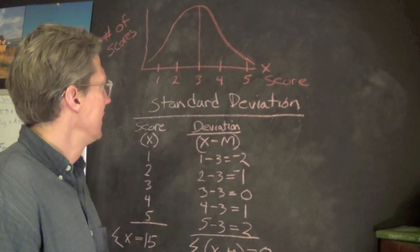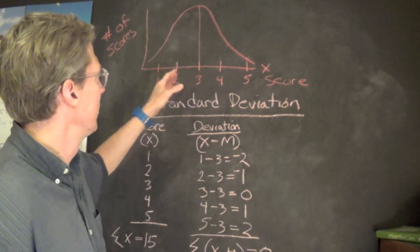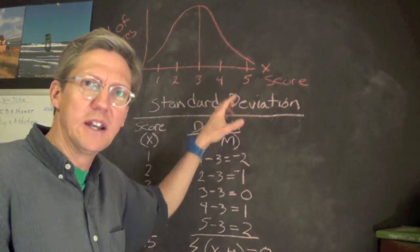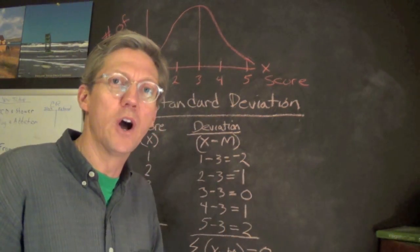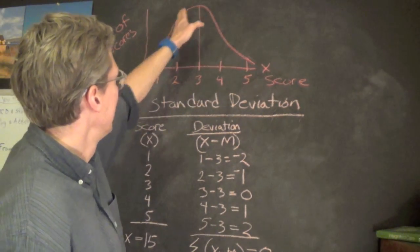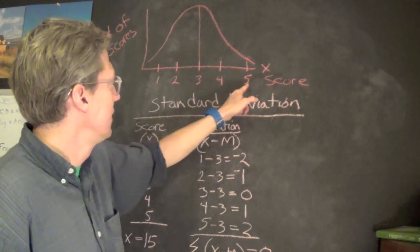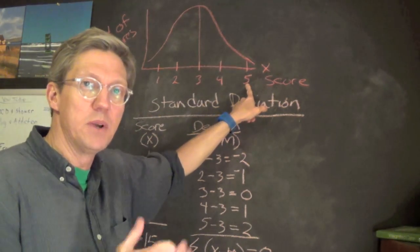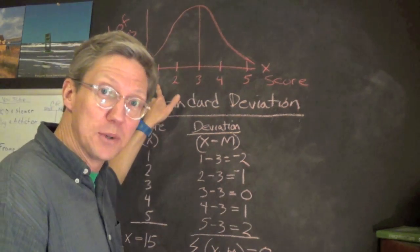Now we're assuming we've got this normal curve with our grit scale data. And again, the grit scale is a measure of somebody's persistence towards a goal. We know that the scale goes from one to five, five being higher, grittier, one being less gritty, less persistent.